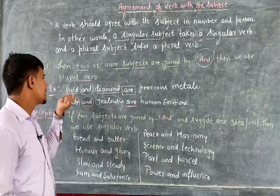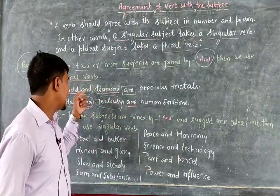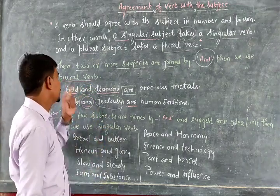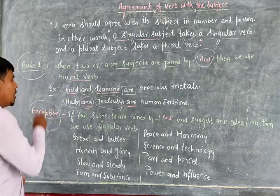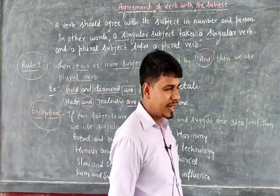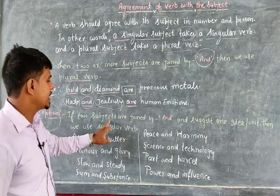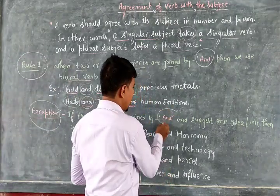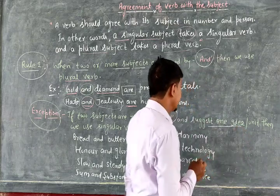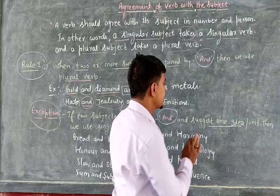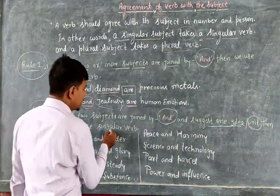It doesn't matter whether subjects are singular, plural, or pronouns — if joined by 'and', use the plural form. However, we have some exceptions. If two subjects are joined by 'and' but suggest one idea and are used as one unit, in that case we use the singular form.